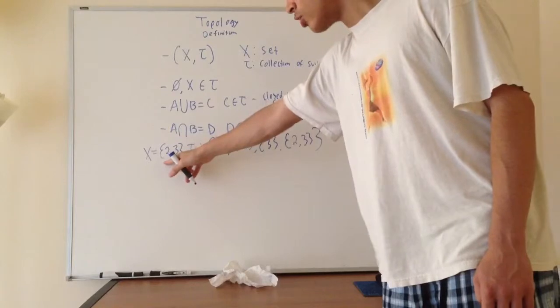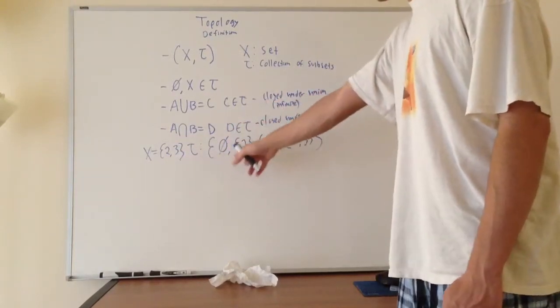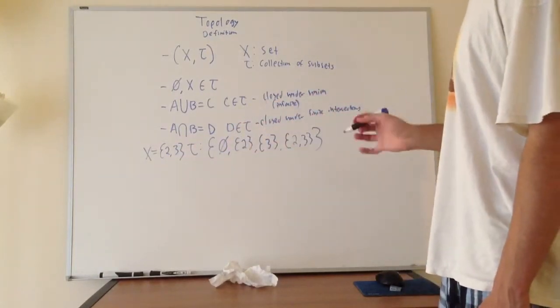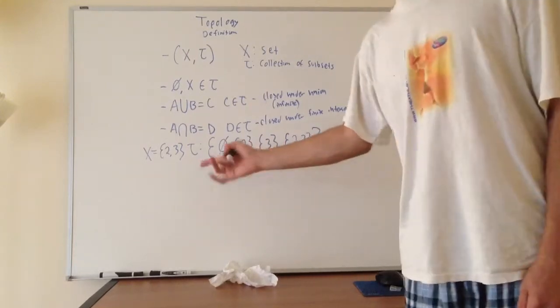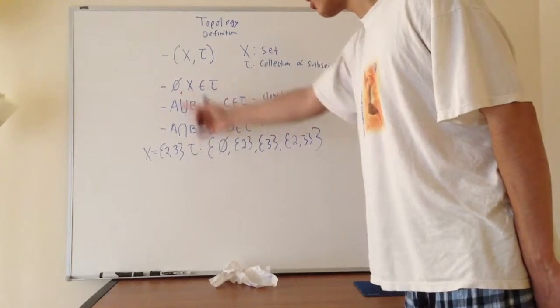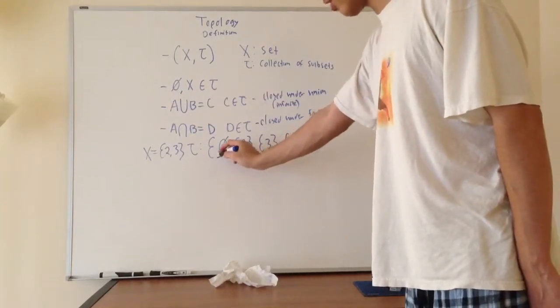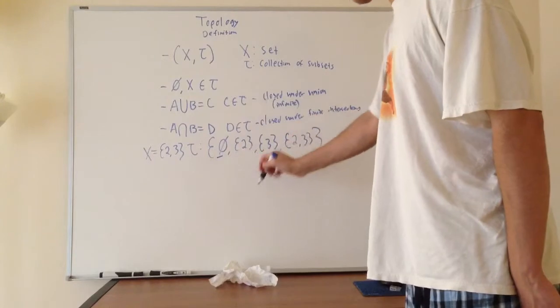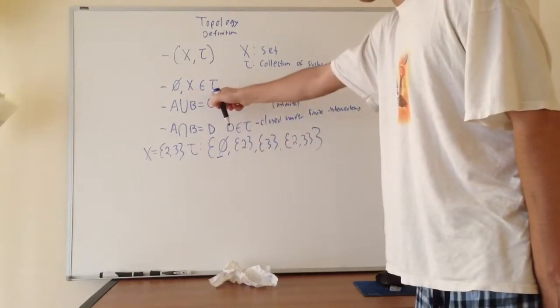Suppose our set X is 2 and 3, and our collection of subsets is the empty set, 2, 3, and {2,3}. And we want to check and see if this is a topology. Well, let's just go through the axioms. Is the empty set inside here? And we see the empty set's right here. So that first condition's met.